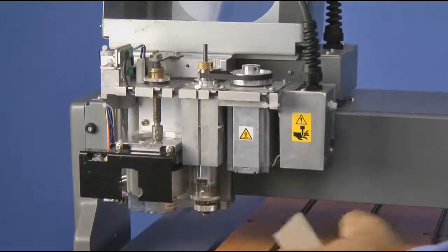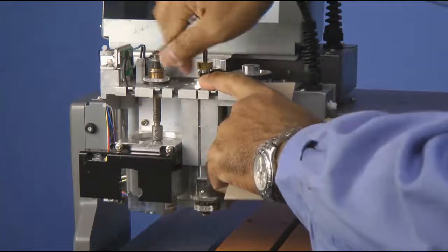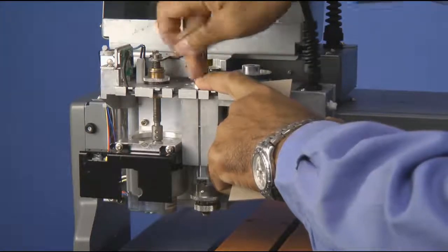Once again, we will tighten the hex screw at the cutter knob and we will remove the braille dot cutter.